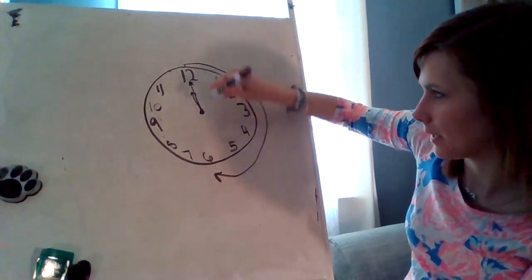Let's try another one. Can you make this time on your clock? 4 o'clock. That hour hand is going to be pointing right at the 4, and that minute hand is going to be up on the 12. 4 o'clock.